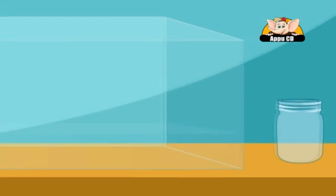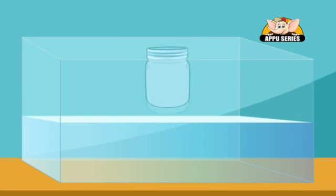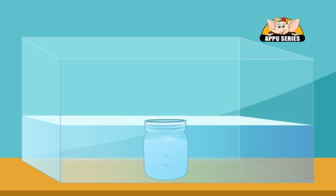Fill the aquarium with water and submerge the jam jar. Place the weed inside the jar and then stand the jar on its open end so the weed is left sitting underneath.